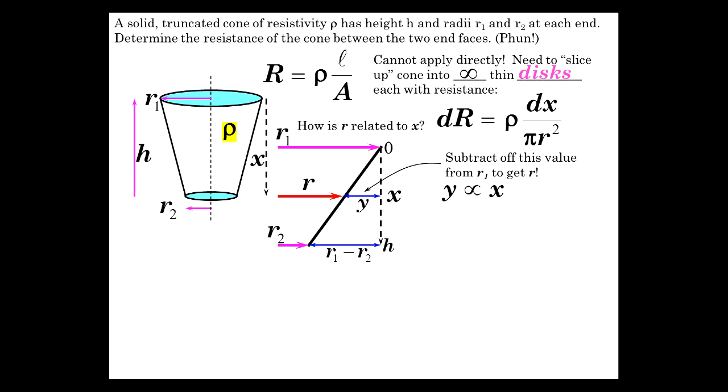Now, y is proportional to x. This y that we're going to subtract off from r1. So that's proportional to x. And so now I'll start looking at this triangle here of y and x.